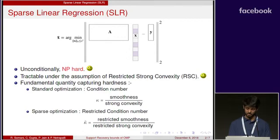In the standard optimization setting, the fundamental quantity that captures the hardness of the problem is called the condition number kappa, which is defined as the ratio of smoothness and strong convexity of the objective function.